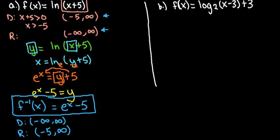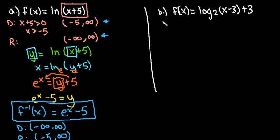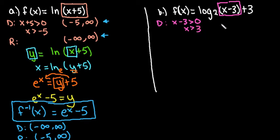Let's look at another example to make sure you understand the concept. It doesn't matter whether you're dealing with natural logs or a log of any base — you do the same steps. For this function, to find the domain, we only look at x minus 3 inside the parentheses. The plus 3 outside does not impact the domain. So x minus 3 has to be greater than 0, meaning x has to be greater than 3. Our domain is from 3 to infinity, and the range for logarithms is always negative infinity to positive infinity.